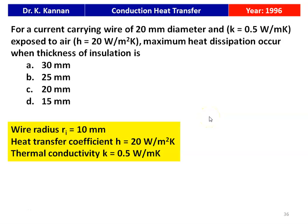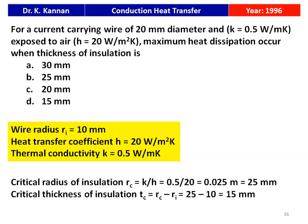Given data: radius of the wire is 10 mm, heat transfer coefficient H = 20 W/m²K, thermal conductivity K = 0.5 W/mK. The critical radius of insulation R_C = K/H = 0.5/20 = 0.025 m = 25 mm. The critical thickness T_C = R_C − R_I = 25 − 10 = 15 mm. The answer is option B, 15 mm.